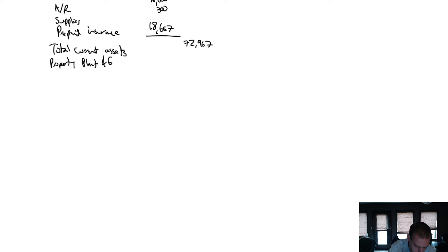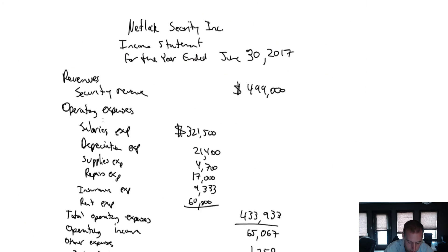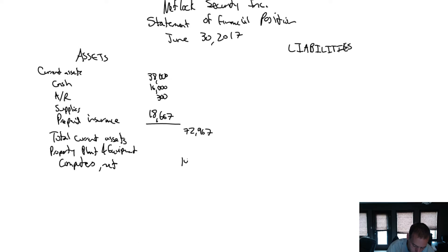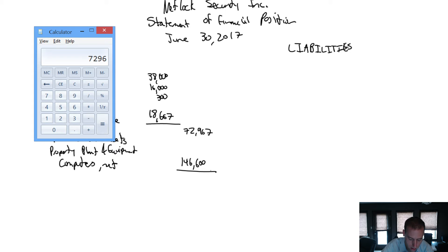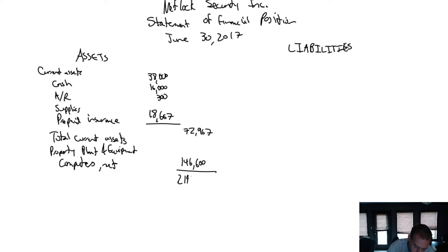Property, plant and equipment — which is of course land, building, and equipment — and we have in that category computers, net book value 146,600. So our total assets: 72,967 plus 146,600 equals 219,567. That is my grand total for assets.